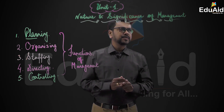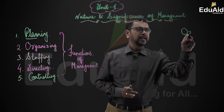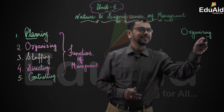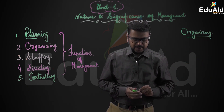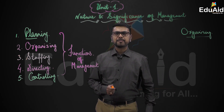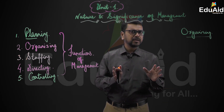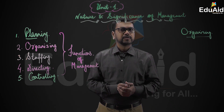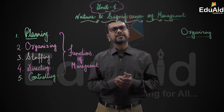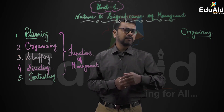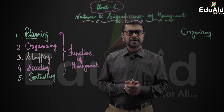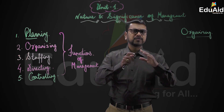The next topic today is on organizing — the second function of management. Organizing is the process of establishing relationships among the members of the enterprise, organization, or company, and to divide the work amongst employees or across various departments, determining the authority, responsibility, and relationships. All these form part of organizing.